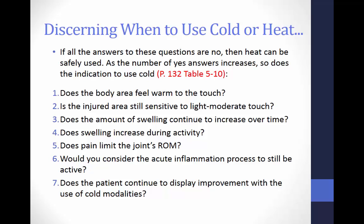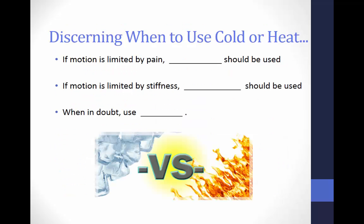The following questions — found on page 132 in Table 5-10 in the Starkey text — can help a clinician evaluate whether heat is appropriate. If all answers are no, heat can safely be used; as the number of yes answers increases, so does the indication to use cold. Number 1: Does the body area feel warm to the touch? Number 2: Is the injured area still sensitive to light or moderate touch? Number 3: Does the amount of swelling continue to increase over time? Number 4: Does swelling increase during activity? Number 5: Does pain limit the joint's range of motion? Number 6: Would you consider the acute inflammation process to still be active? Number 7: Does the patient continue to display improvement with the use of cold modalities? As a general review: if motion is limited by pain, use cold; if motion is limited by stiffness, use heat. When in doubt, use cold.